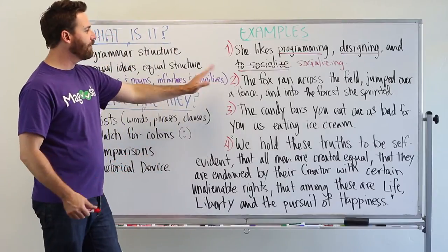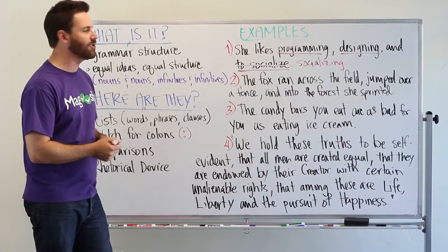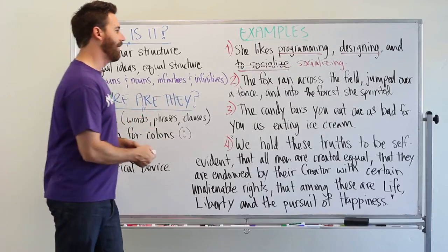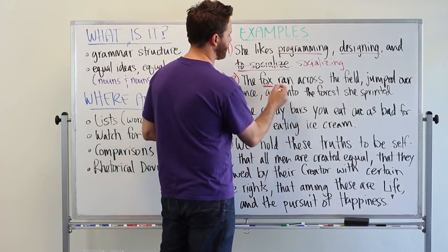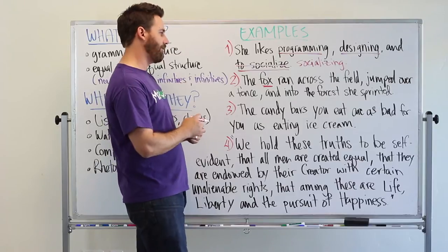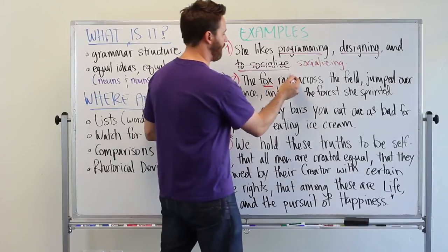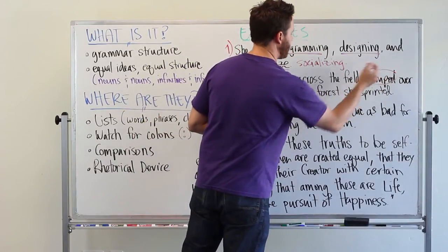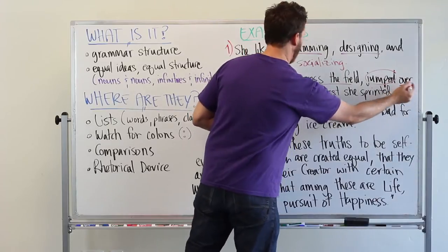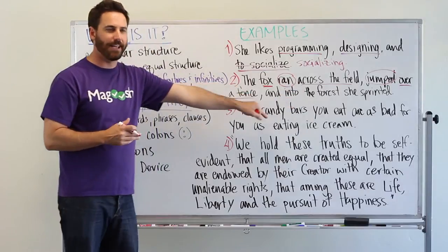I'm going to choose another red pen. Number two. The fox ran across the field, jumped over a fence, and into the forest she sprinted. So here we're dealing with phrases. The main noun here is the fox. And we have ran across the field, jumped over a fence. And so these two phrases are paired nicely. We have a verb, ran and jumped. And then a prepositional phrase, across the field, over a fence.